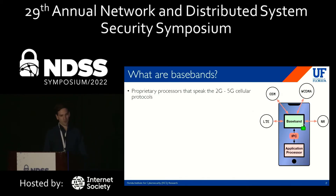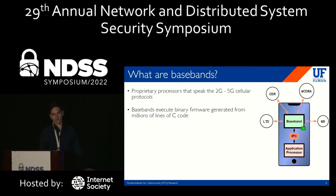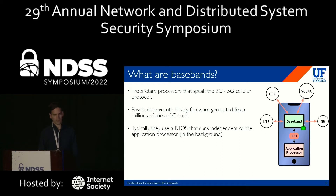So what are basebands? They're proprietary processors that speak the 2 through 5G protocols, and they're on every phone today. So everyone's pocket has a baseband and is probably communicating with the cell tower right now. Basebands execute binary firmware which is generated from millions of lines of C. Firmware is easier to write in C. Typically, they use a real-time operating system that runs independently from the application processor, so they're effectively in the background, continually processing cellular messaging.